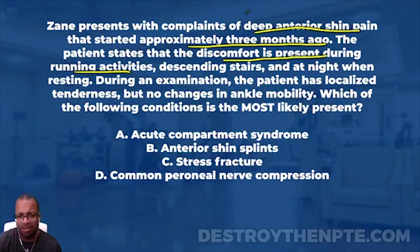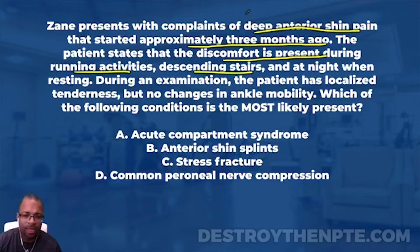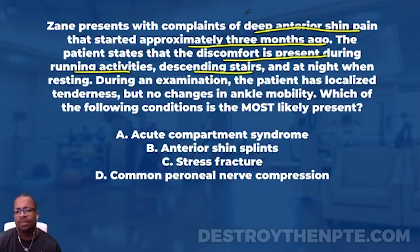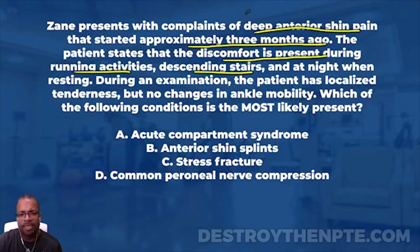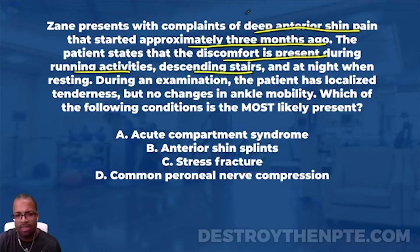It says descending stairs. As I'm thinking about that, I'm thinking about the muscles involved below the knee - the dorsiflexors are responsible for controlling that foot down to the next step, with some isometric and eccentric action. The gastrocs on the leg that stays at the top step must eccentrically allow for dorsiflexion. And when that foot going down hits the next step, that's impact as well - just like running activities.